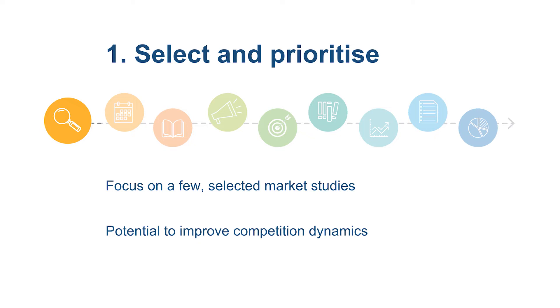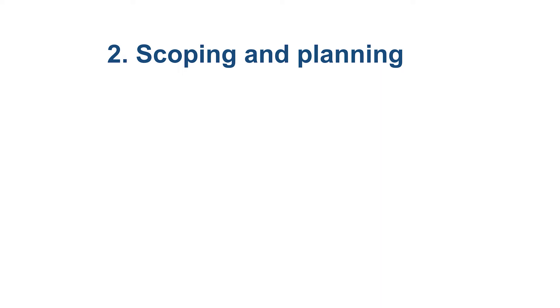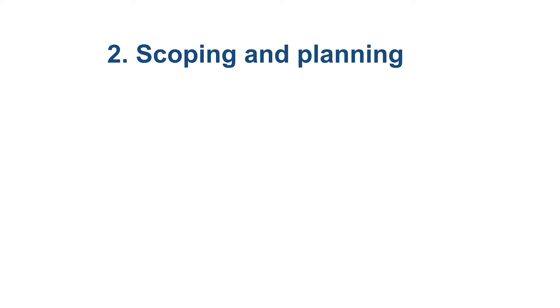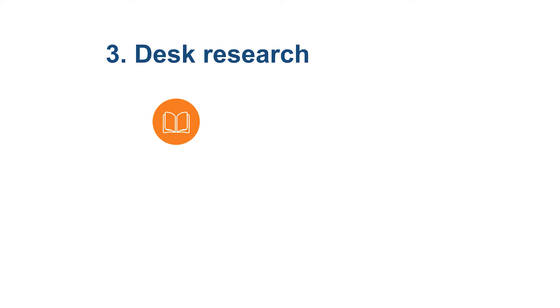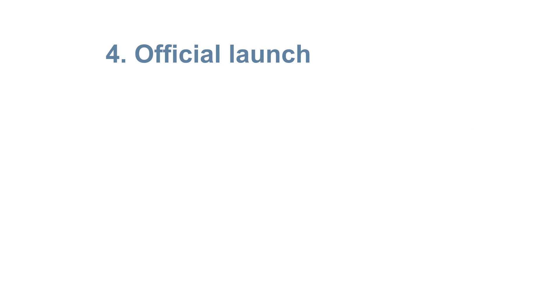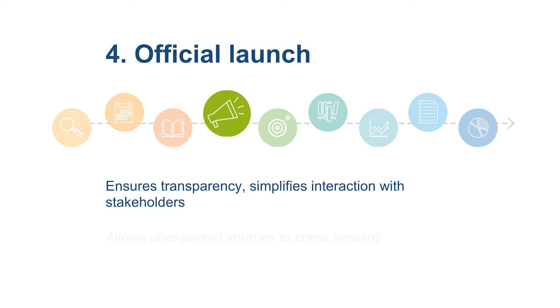The second step is rigorous scoping and planning. Competition authorities should clearly identify the scope and depth of their analysis and commit to a detailed timeline. The third step is initial desk research to collect preliminary information on the product or service, on competitors, consumers, and the regulatory framework. At this stage, many competition authorities officially launch the study. Making the study public ensures transparency, simplifies the interaction with stakeholders, and allows unexpected sources of information to come forward.